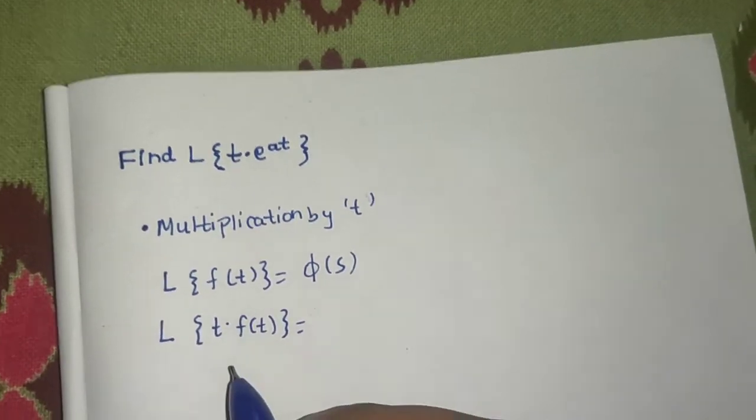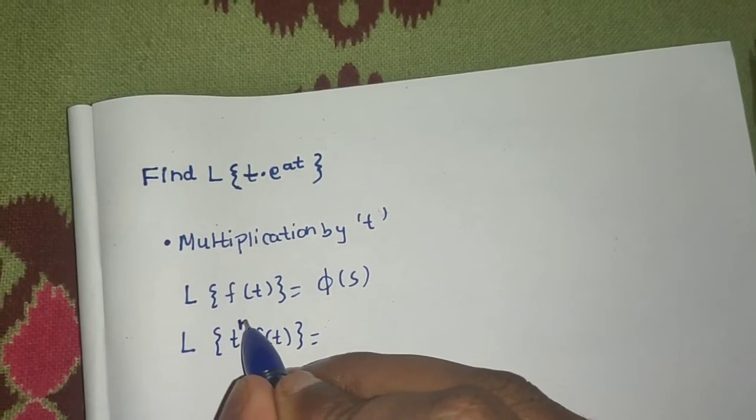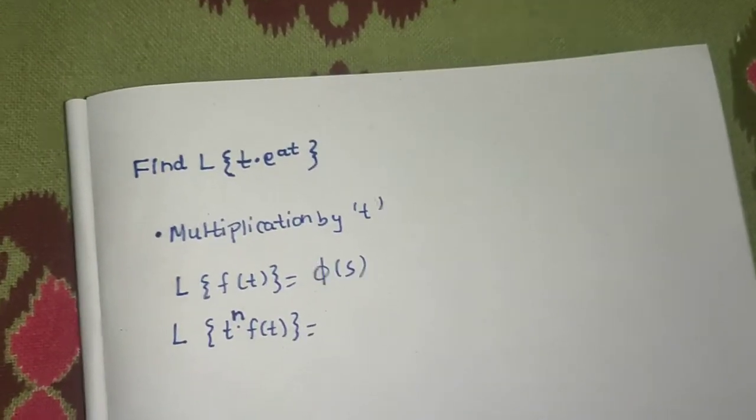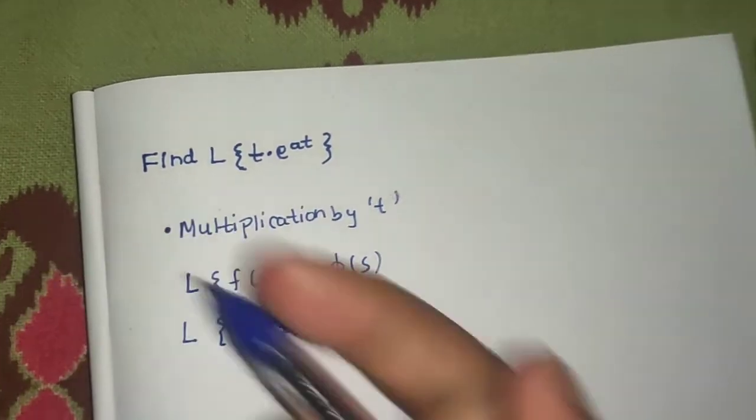Laplace of t times ft, rather not t times, if you want to find Laplace of t power n because we don't know what power will be there. It may be t power 1, it may be t power 2, t power 3 and so on.